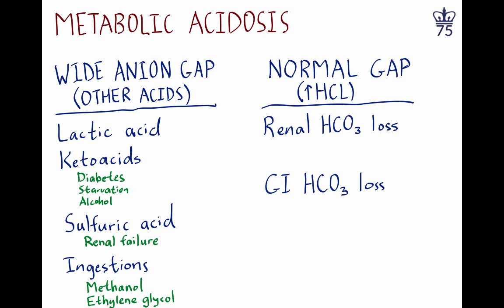In the ICU, for example, when patients are getting TPN, they receive hydrogen chloride mixed with the TPN to balance the dibasic amino acids and make the pH neutral. When the amino acids get metabolized, the HCl — hydrogen chloride — is left in excess, and that can depress your bicarbonate.